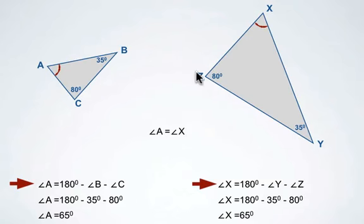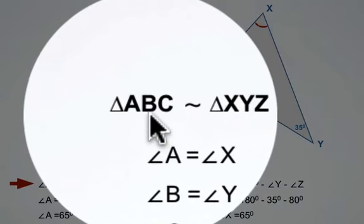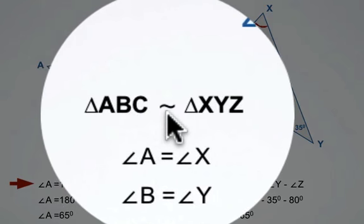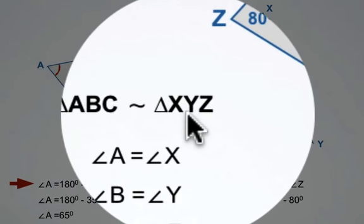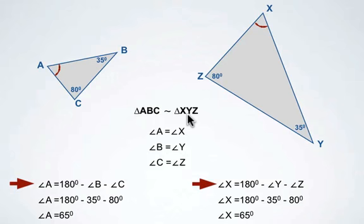So we have angle A equal to angle X, angle B is equal to angle Y, and angle C is equal to angle Z. Therefore, it is true that triangle ABC is similar to triangle XYZ because the corresponding angles are congruent or equal.